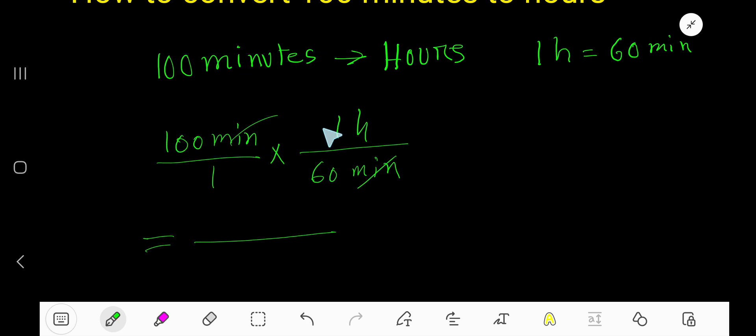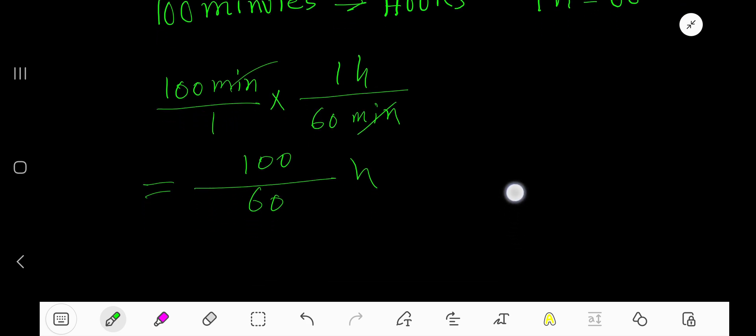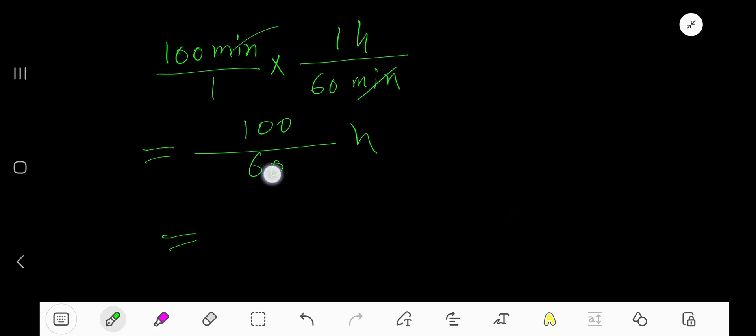Top number: 100 times 1 means 100. 1 times 60 means 60 hour. Now cancel this zero, this zero. Divide this by 2, we'll get 5. Divide this by 2, we'll get 3. So 5 over 3 hour. Let me divide 5 by 3.